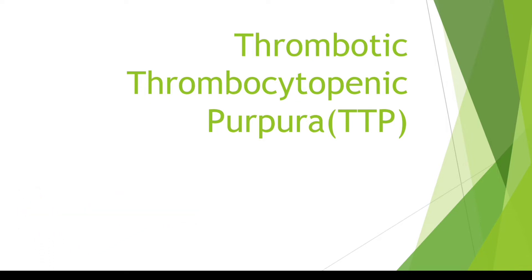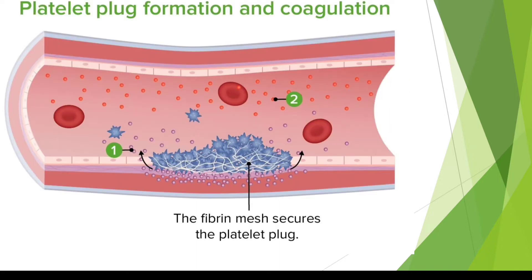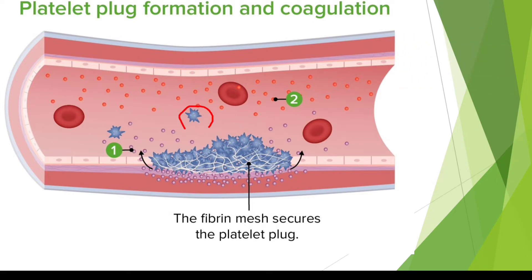Today's topic is thrombotic thrombocytopenic purpura. Before going into details, let's understand the process of platelet plug formation and coagulation. Platelets are an important component of our blood and primarily deal with blood plug formation and coagulation. Through these two processes, platelets stop bleeding whenever there is a cut or injury in any blood vessel.